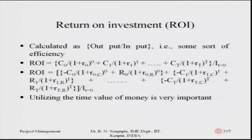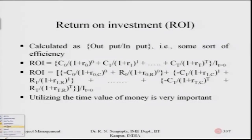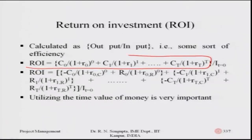The next point in slide 337 is return on investment, ROI. Technically, return on investment is an efficiency calculation given by the ratio of output to input. If I am calculating my return on investment based on the overall quantum of investment happening at different points of time t=0, t=1, t=2, t=3 up to t=T, the input-output cumulatively at each point of time is given by C0, C1, up to C-sub-T. The numerator is the time value of money as of now.